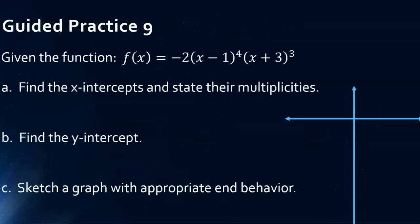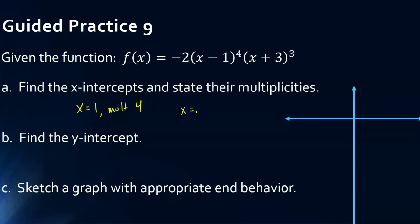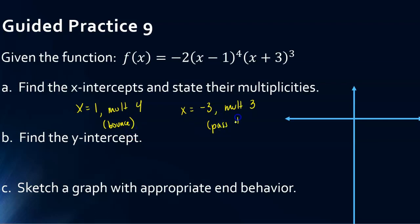I want you to try one completely on your own. Go ahead and pause the video and hit play when you're ready to check your work. So the x-intercepts would be x equals 1 with a multiplicity of 4, and x equals negative 3 with a multiplicity of 3. A multiplicity of 4 means it's going to bounce, and a multiplicity of 3 means it's going to pass through.